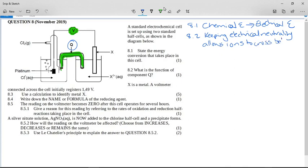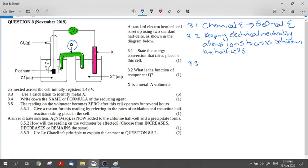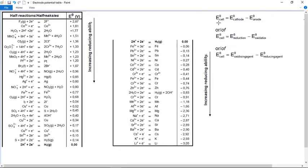Now it says X is a metal, see here is X, this electrode over here. A voltmeter across the cell initially registers 1.49 volts. Use a calculation to identify the metal X. When we do the calculations, we have to use these formulas: E°cell = E°cathode - E°anode, or E°cell = E°reduction - E°oxidation, or E°cell = E°oxidizing agent - E°reducing agent.